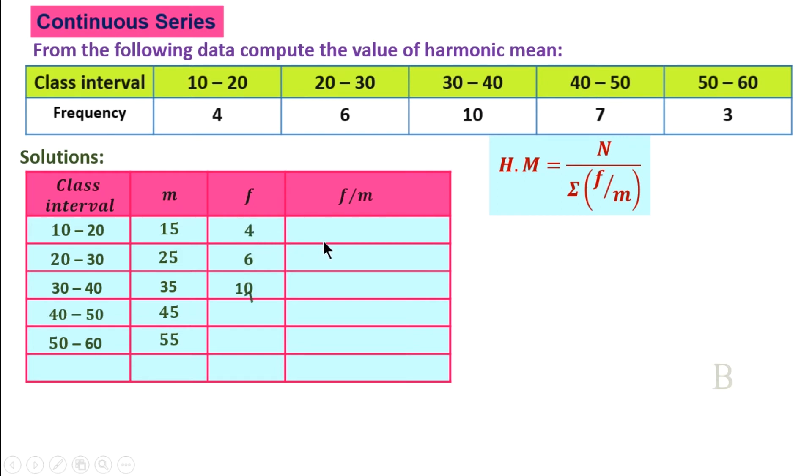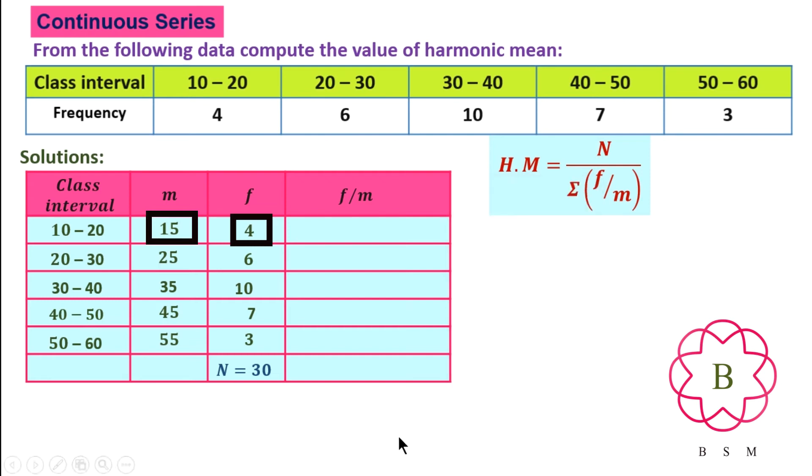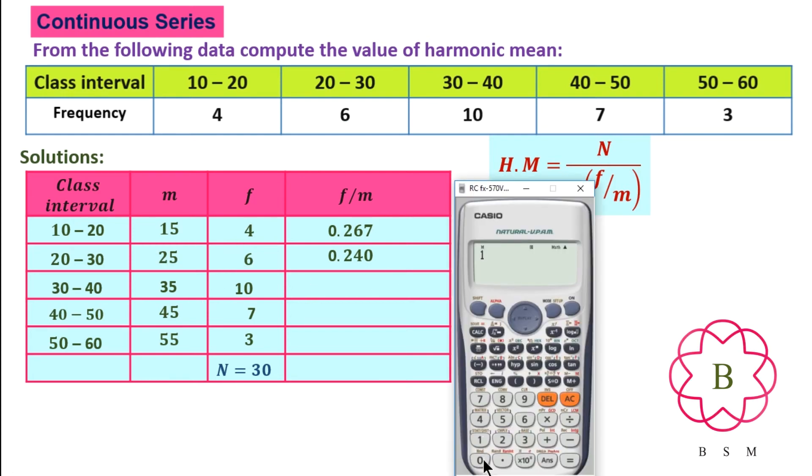F here, then M here, divide. So F, we add N is equal to 30. F divided by M: 0.267, 6 divided by 25 is 0.240, 10 divided by 35...